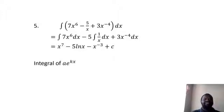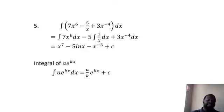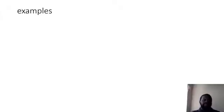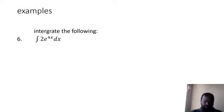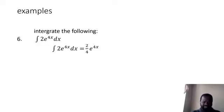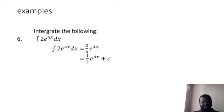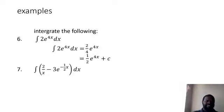Another special integral is the integral of ae exponent kx. Remember that the derivative of ae^(kx) is found by multiplying a by the derivative of kx, which is the constant k. With integration, instead of multiplying by k we divide by k. This result will be given on your formula sheet. For example, the integral of 2e exponent 4x: your k is 4 and your a is 2, so you divide 2 by 4 to get 1 over 2, giving one half e exponent 4x plus c.